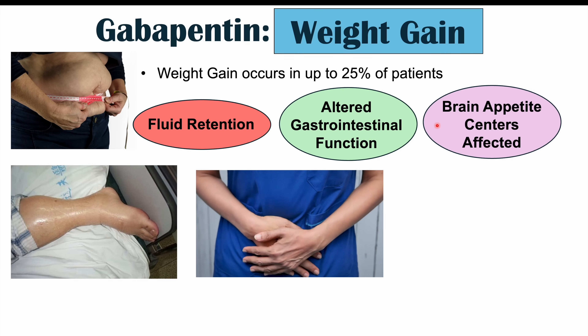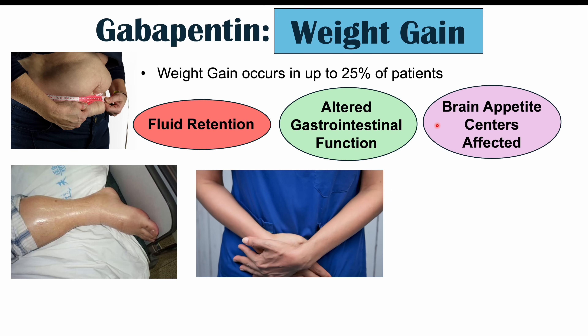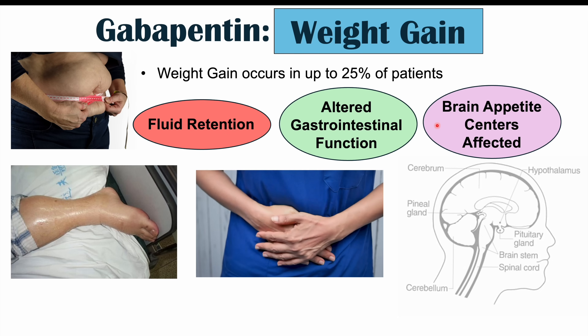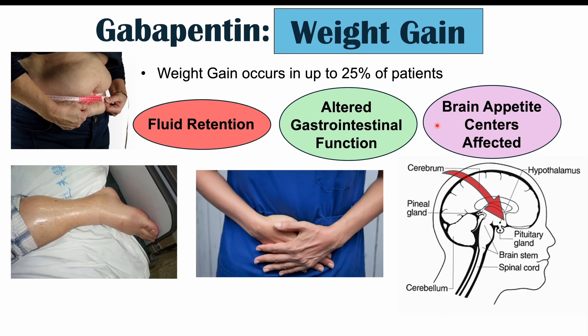Another hypothesis is that gabapentin may be acting on the brain, especially particular appetite centers. Appetite centers in the brain are in the hypothalamus, where appetite is regulated. There is some hypothesis that gabapentin is acting on the hypothalamus and increasing appetite. Finally, another proposed mechanism includes gabapentin-induced sedation or decreased activity, which may also be leading to weight gain.